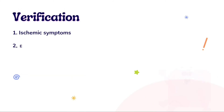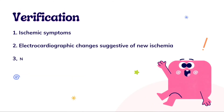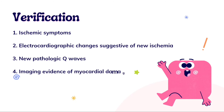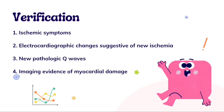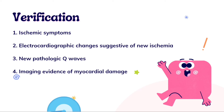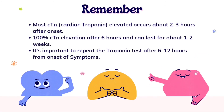Verification of acute coronary syndrome can be done using one of the following criteria along with elevated troponin T values: ischemic symptoms along with elevated troponin T, electrocardiographic changes suggestive of new ischemia, new pathologic Q waves, or imaging evidence of myocardial damage. Most cardiac troponin elevation occurs about two to three hours after onset.